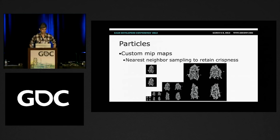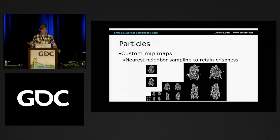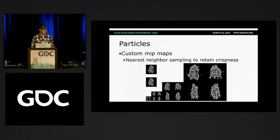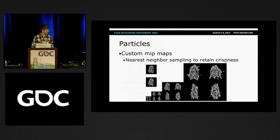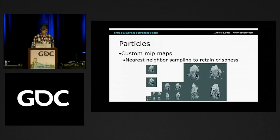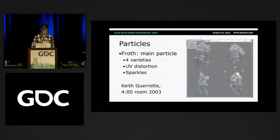The quarter res buffer buys us a lot in terms of fill rate, but it also means half or a quarter of the resolution, making things look much more fuzzy. To combat that, I did custom mip maps — I took the alpha and color texture into Photoshop and down-sampled using nearest neighbor filtering, which gives a much better histogram. You can see there's higher contrast and a sharper image with nearest neighbor compared to bilinear filtering. I recommend doing that if your engine supports it.